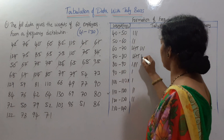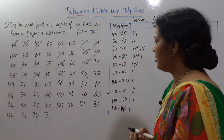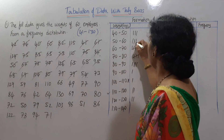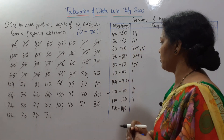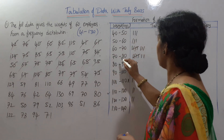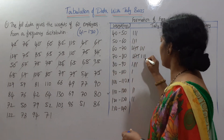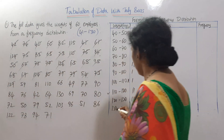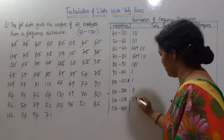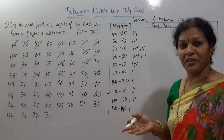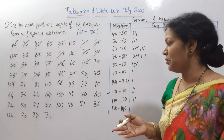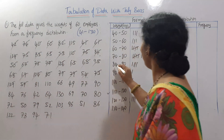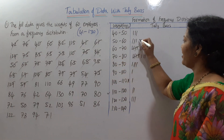79 is placed in 70 to 80. Next: 54 falls in 50 to 60. 73 falls in 70 to 80. Then 129 falls in 120 to 130. 59 falls in 50 to 60.